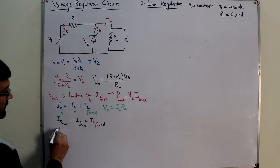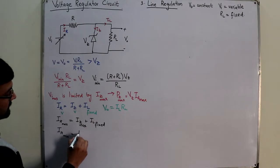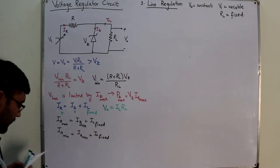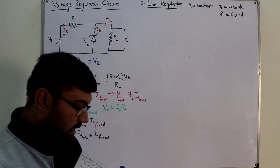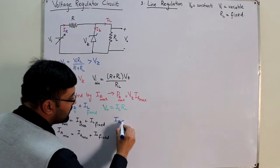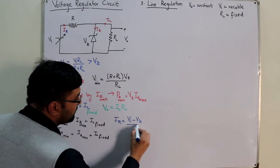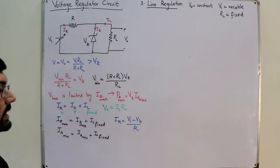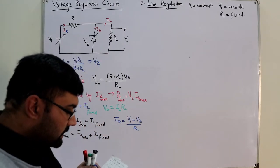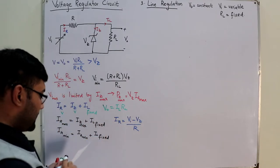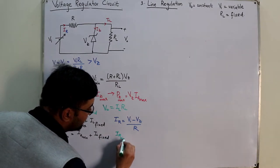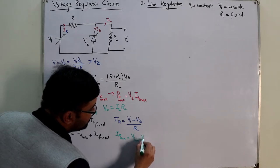When IR is minimum, IZ is also minimum, because IL is fixed. The resistive current IR can be calculated as IR = (VI − VZ) / R. Since input voltage is variable, if VI is maximum then IR is maximum, and if VI is minimum then IR is minimum. So: IR_minimum = (VI_minimum − VZ) / R.